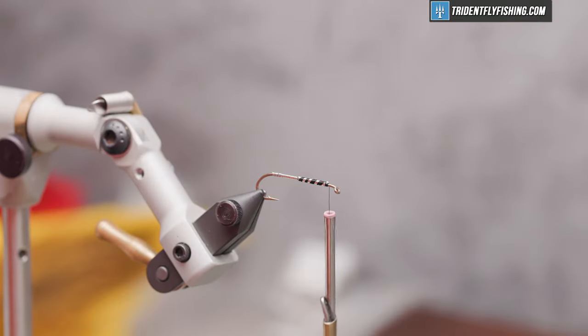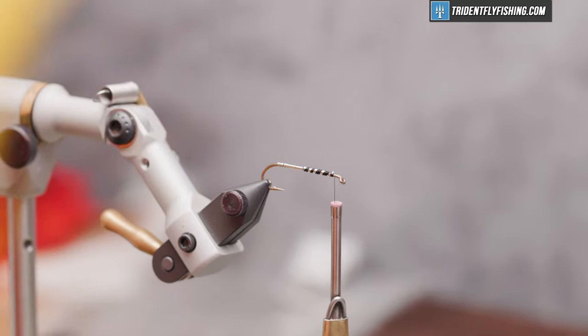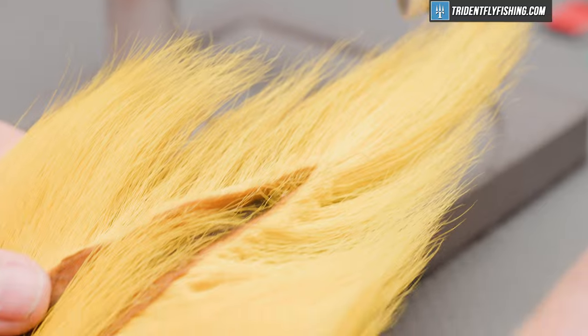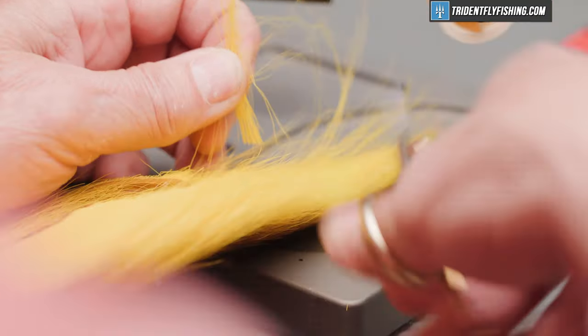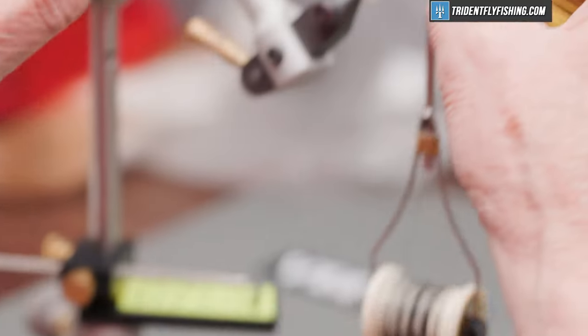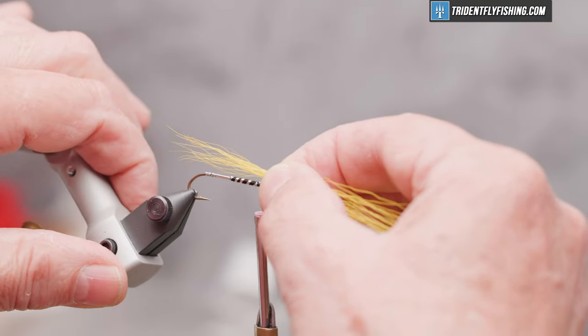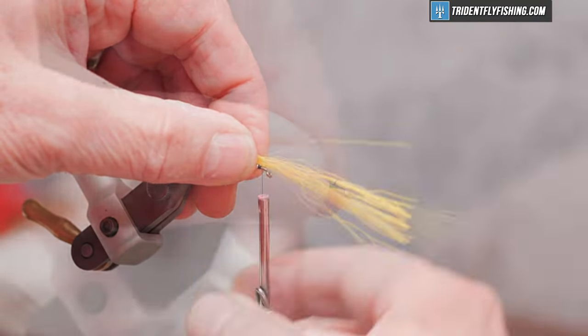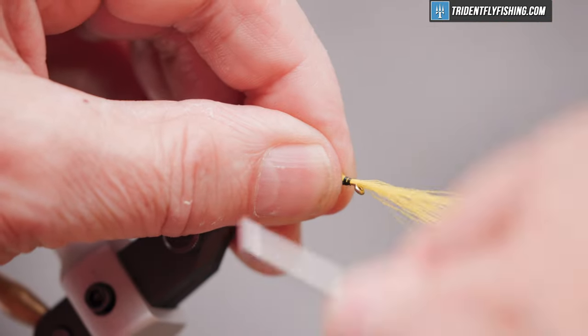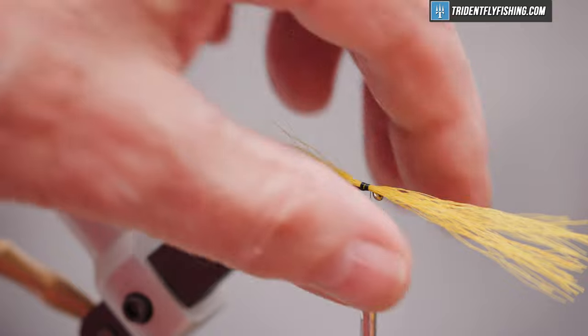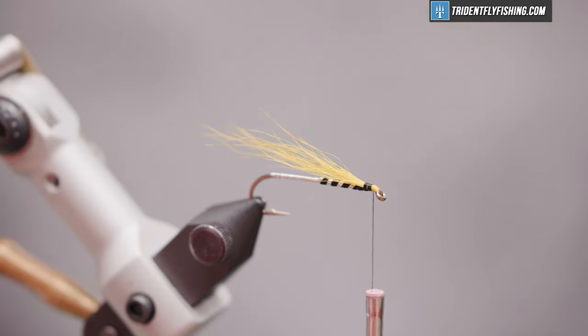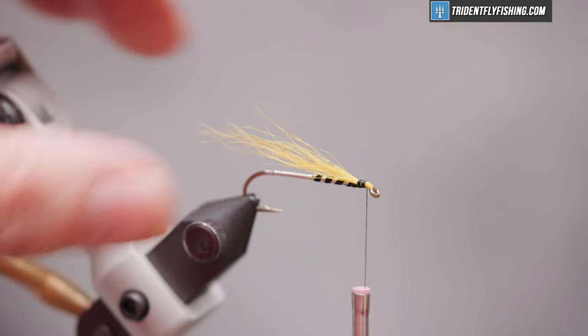We'll tie in the first wing material. There's three pieces to this wing, and the first piece is some yellow deer hair. We want this to be pretty wispy. Looks good, it's fairly even. Just past the bend of the hook, we're going to tie this in. Cut off the excess, jump our thread forward and wrap back to the tie-in point.